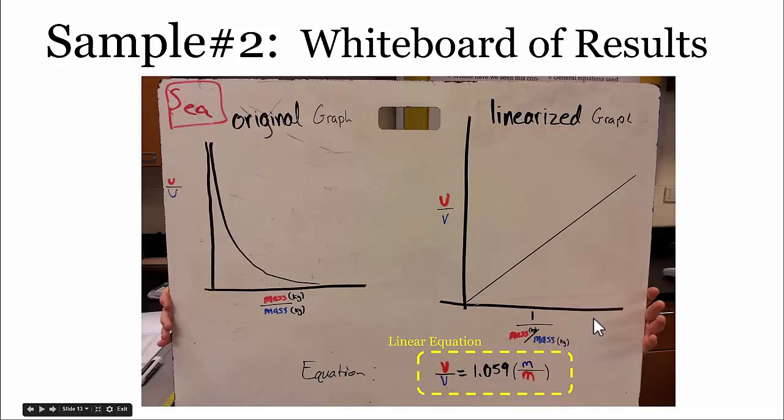So that shows that as the x variable, as this mass ratio approaches zero, we would expect that the velocity ratio would also approach zero.